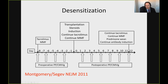Post-transplant, you continue to eliminate circulating antibody and watch antibody strength. If there's rebound, you can manipulate the protocol. If there's evidence of antibody-mediated rejection, you can also manipulate the protocol. We'll talk about AMR later in the day.